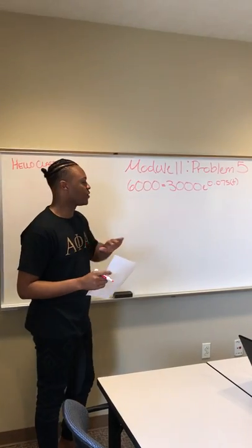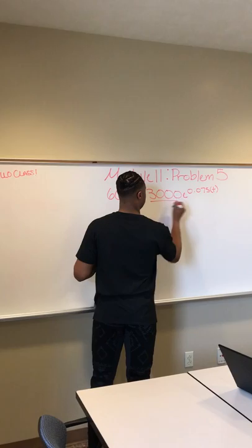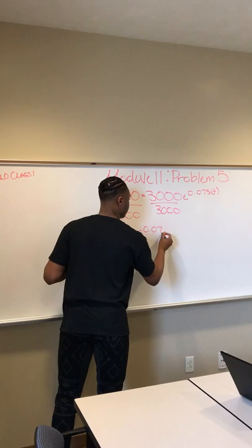The problem we're trying to figure out is when 3,000 becomes 6,000. That's why we set the equation equal to 6,000. In order to solve the equation, we're going to divide each side by 3,000. That gives us 2 equals e to the 0.075T.